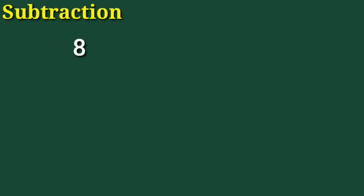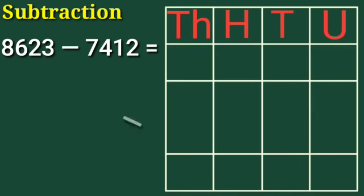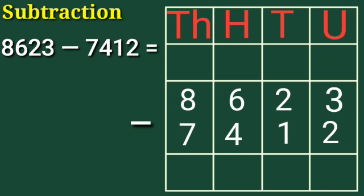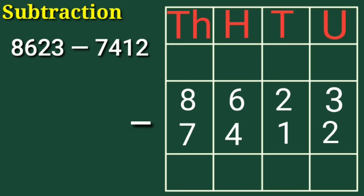Now children, let's work on 8,623 minus 7,412. Let's draw a table. Write U for units, T for tens, H for hundreds, and TH for thousands. Now: 3 is under the units column, 2 is under the tens column, 6 is under the hundreds column, 8 is under the thousands column. For the second number: 2 is under units, 1 is under tens, 4 is under hundreds, 7 is under thousands.